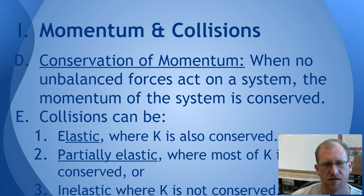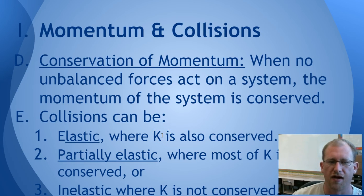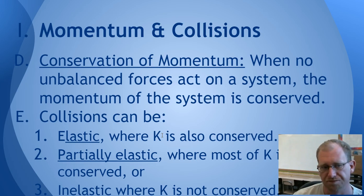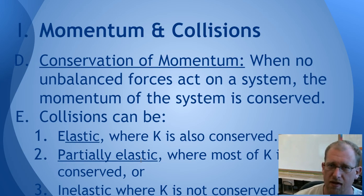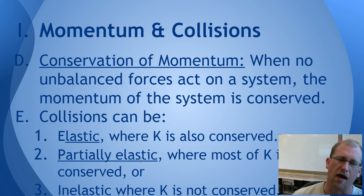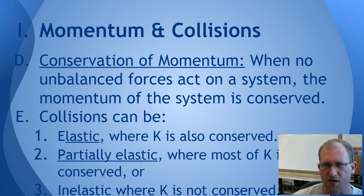We have three different kinds of terminology for collisions — all of them conserve momentum. In an elastic collision, kinetic energy is conserved: you can find all the kinetic energy present in the way things ricochet after the collision. In a partially elastic collision, you can find most of the kinetic energy still as kinetic energy in the objects as they bounce apart, but some has been lost — usually because objects got deformed when they ran into each other. In an inelastic collision, kinetic energy is not conserved at all — that's usually when things hit and stick.